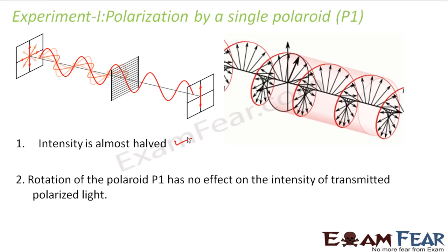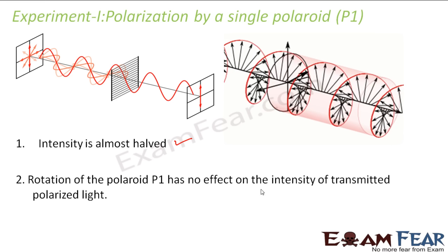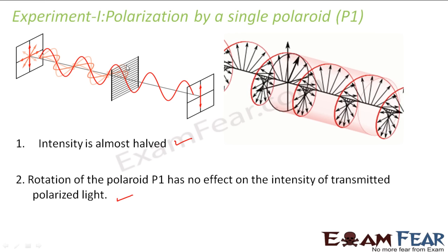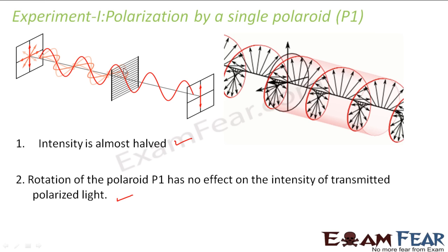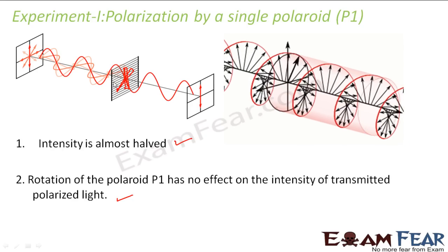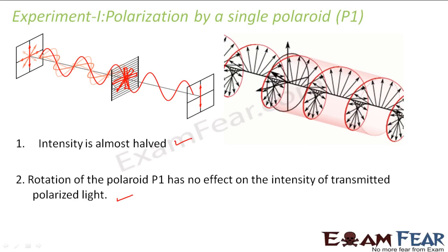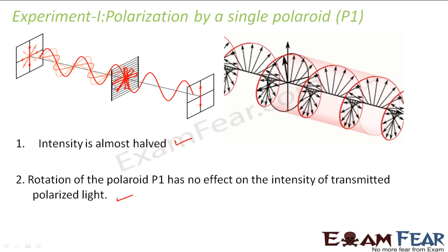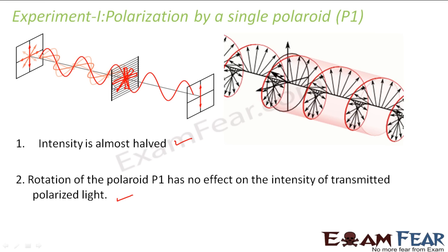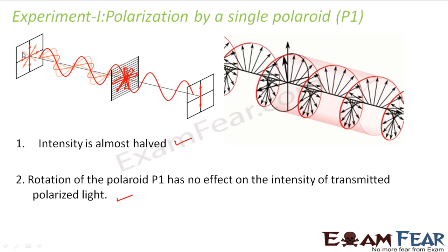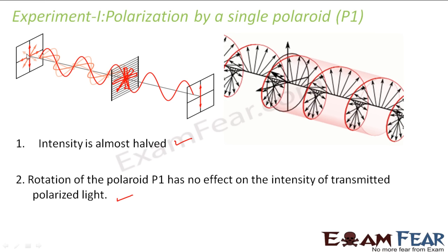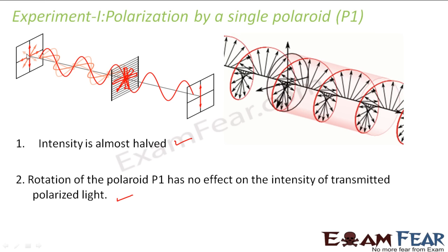The next observation was that rotation of the polaroid has no effect on the intensity of the transmitted polarized light. That's because even if you rotate the polaroid — whether the pass axis is along this direction, or rotated somewhat like this — at any orientation, it will allow only half of the light to pass through. That's because in the unpolarized light you have equal amounts of light in all possible directions, so whichever direction you rotate the polaroid, the same amount of light will be allowed to pass through.